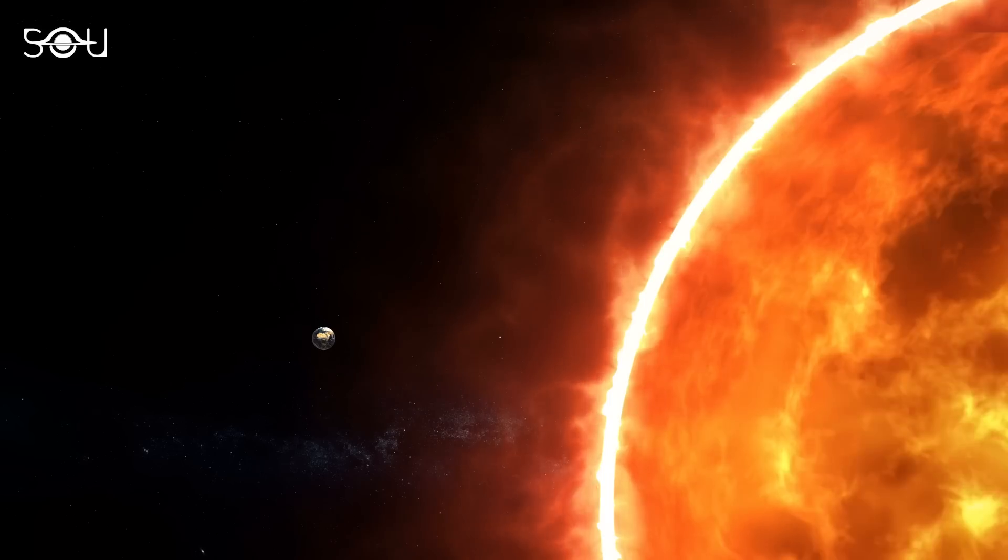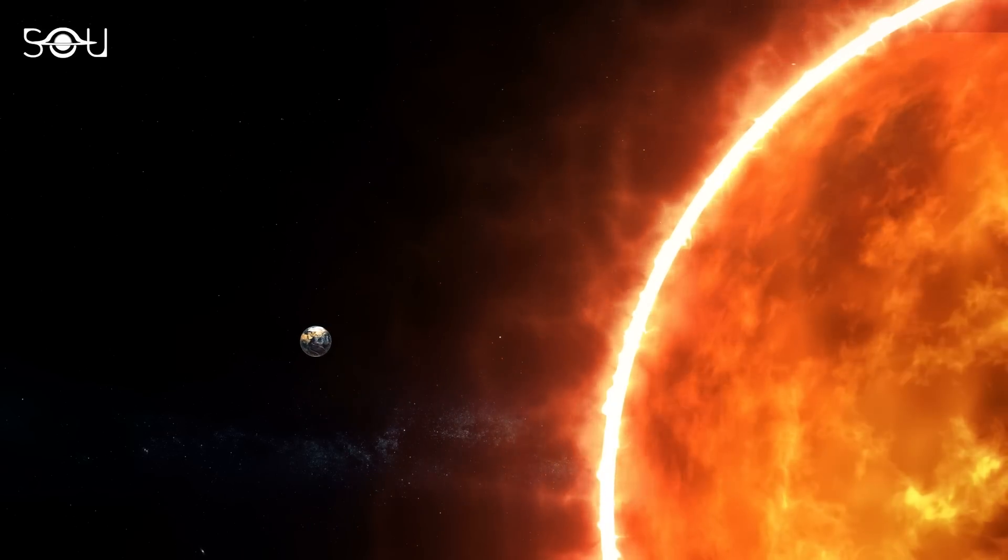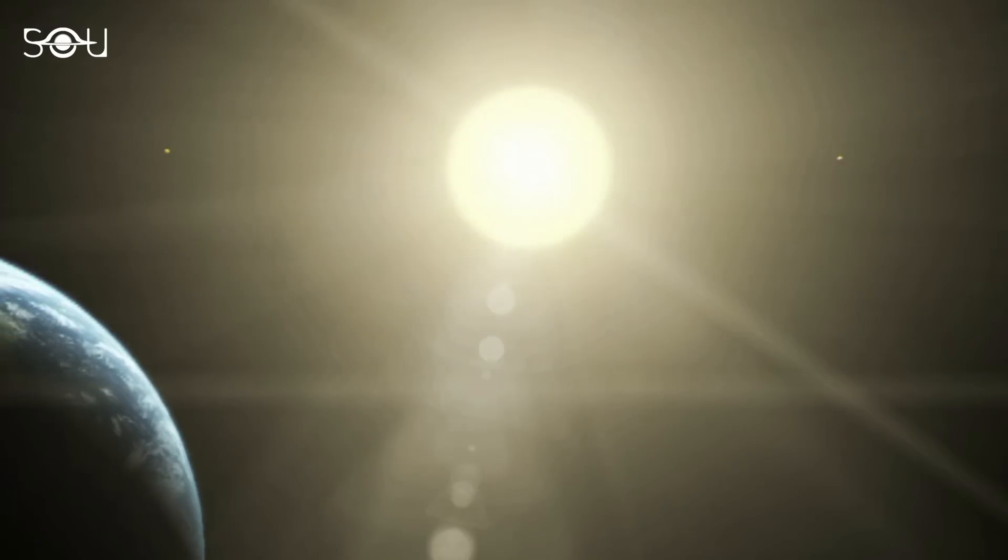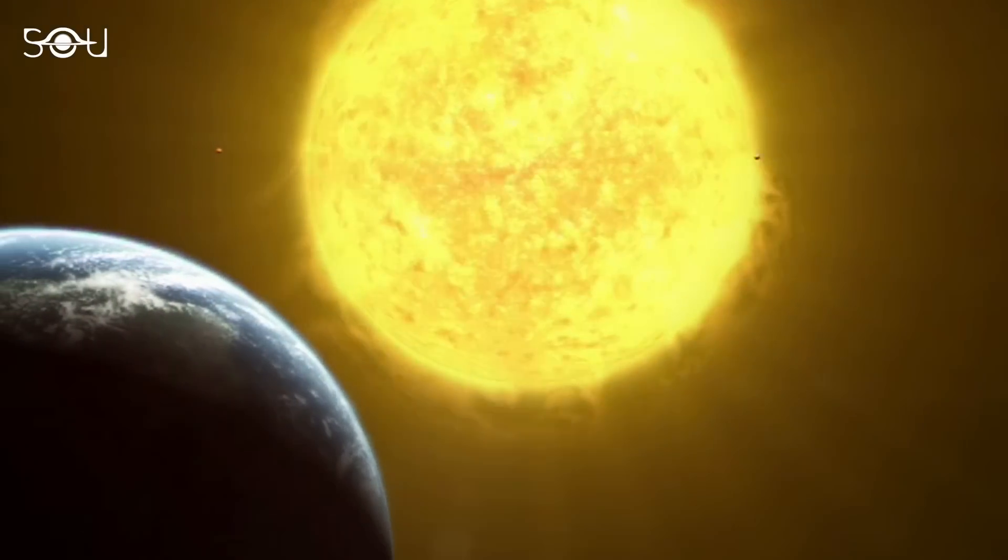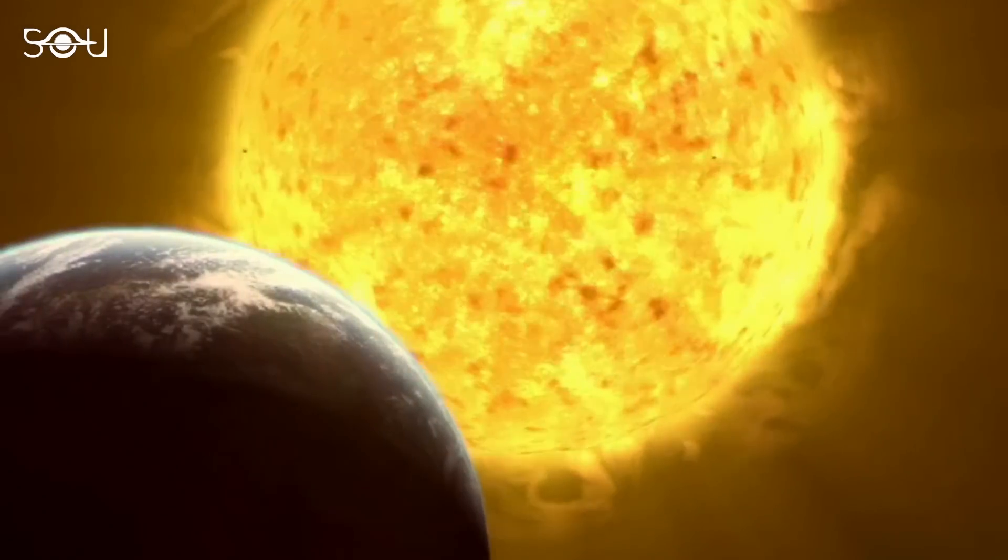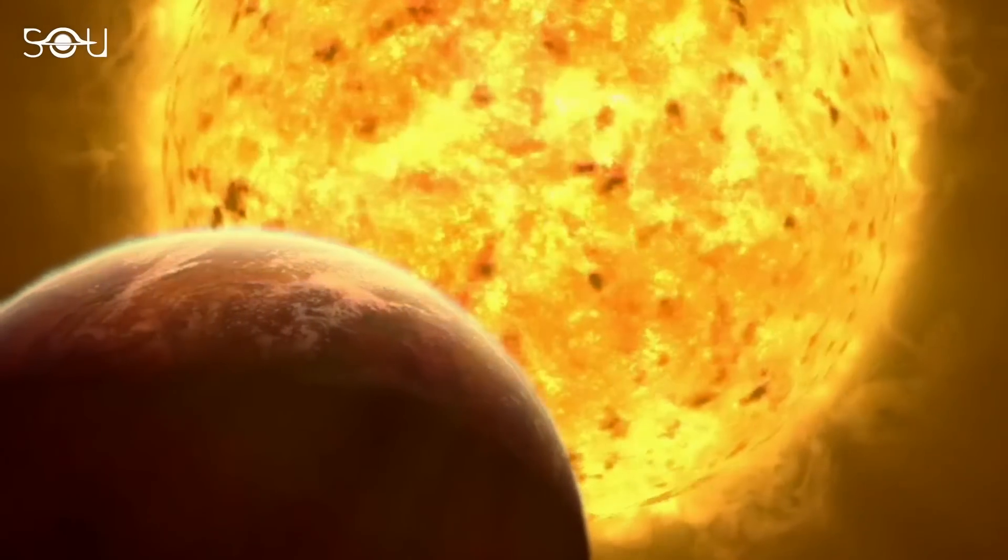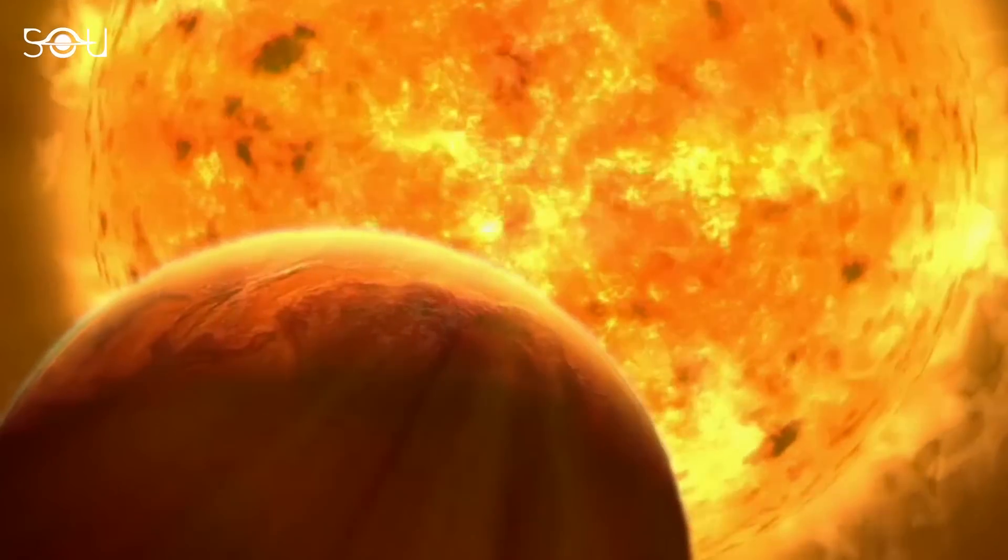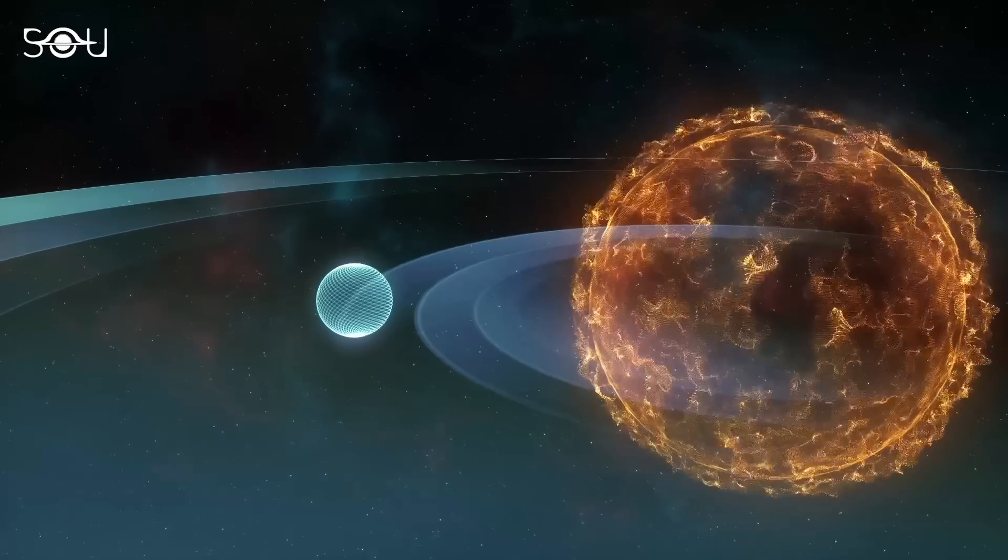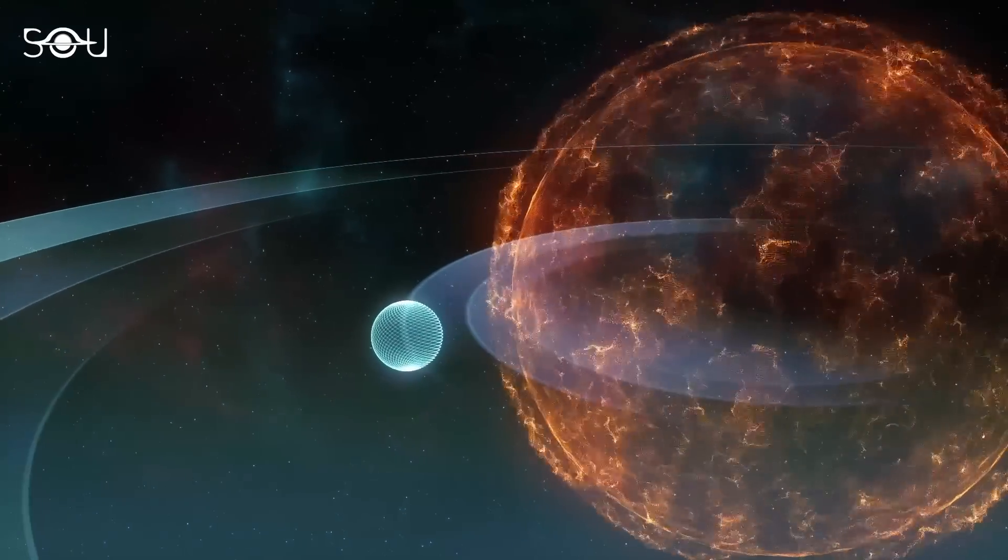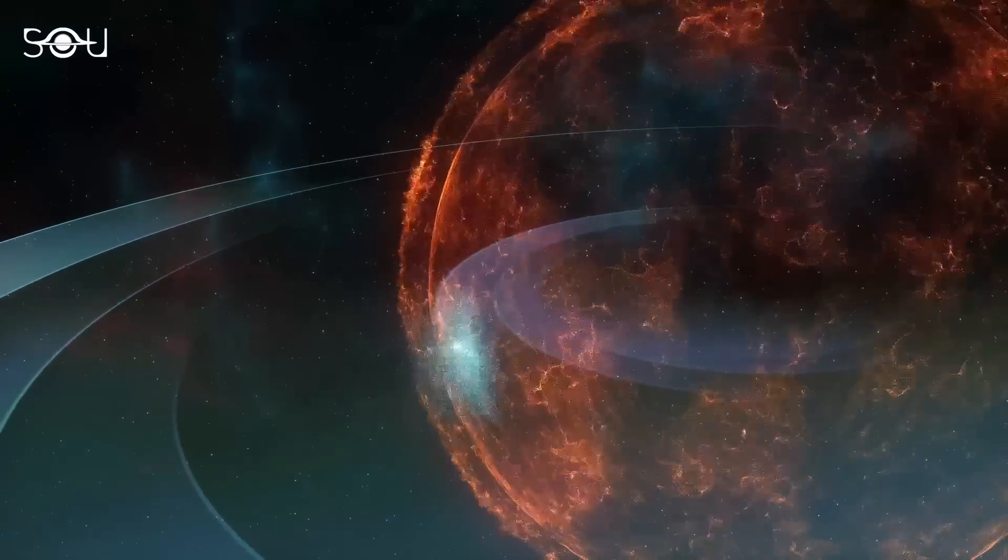This observation is special because it's a glimpse into the future of our solar system. As the Sun approaches the end of its life cycle and transforms into a red giant, it will expand to such an extent that it is expected to engulf the inner planets including Mercury, Venus, and even Earth. So this discovery can contribute to a more precise forecast of the future of our solar system.